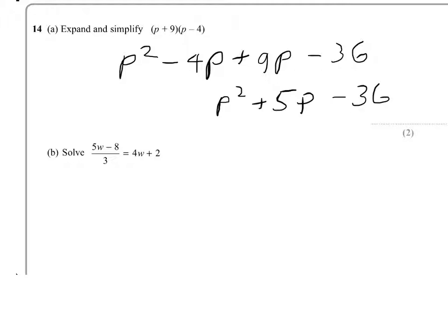Right, solving 5w minus 8 over 3 equals 4w plus 2. We start by moving that 3 on the bottom to the other side. Now, we could write out hand brackets, or we could simply say 3 lots of 4w will be 12w. And remember, we've got to multiply the 2 as well. 3 times 2 would be 6.